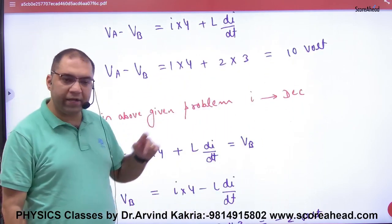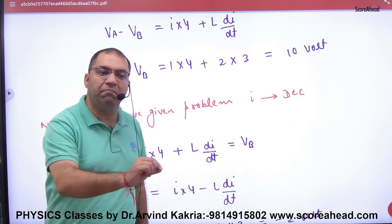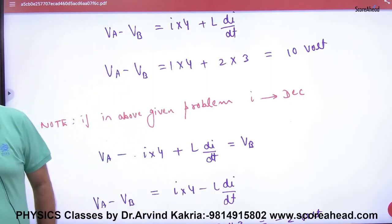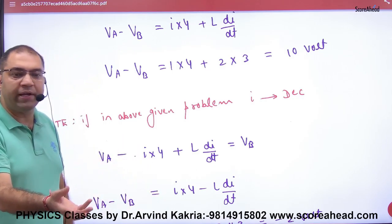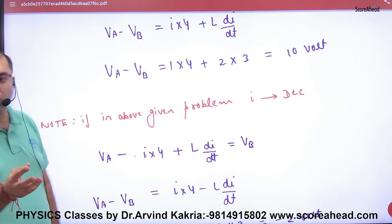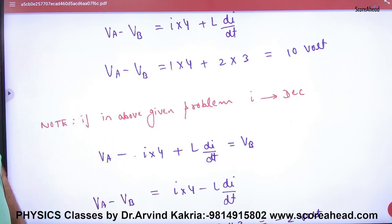And if current decreases in this question, then where di by dt you will put minus 3. This is important. So di by dt, the rate of change of current, if increase then di by dt plus 3, and if decrease then di by dt minus 3.